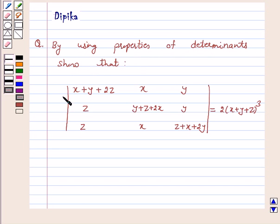Show that determinant x plus y plus 2z, x, y, z, y plus z plus 2x, y, z, x, z plus x plus 2y is equal to 2 times x plus y plus z whole cube.